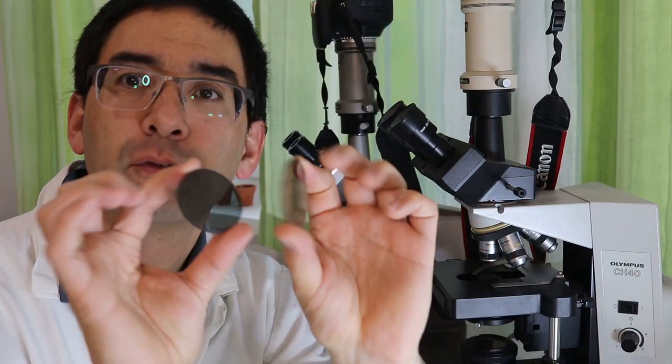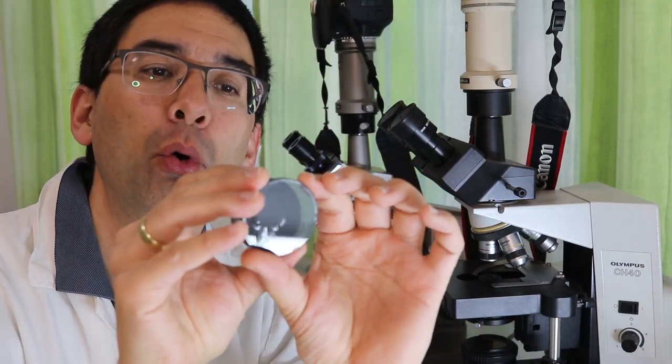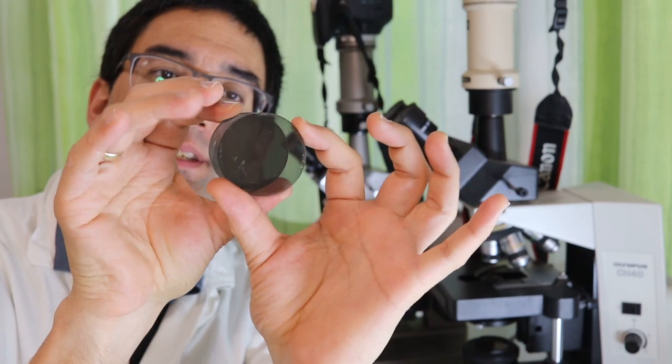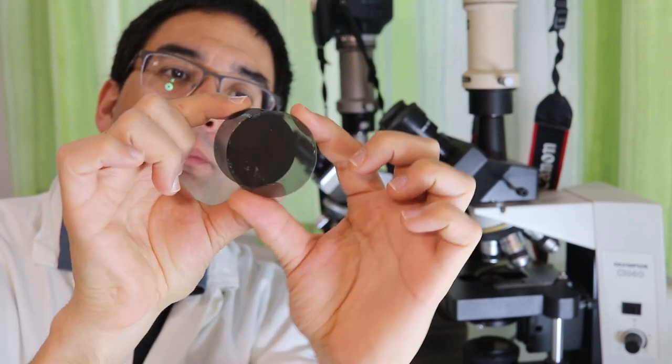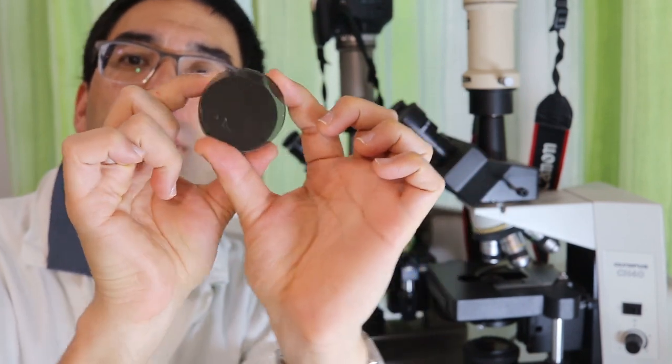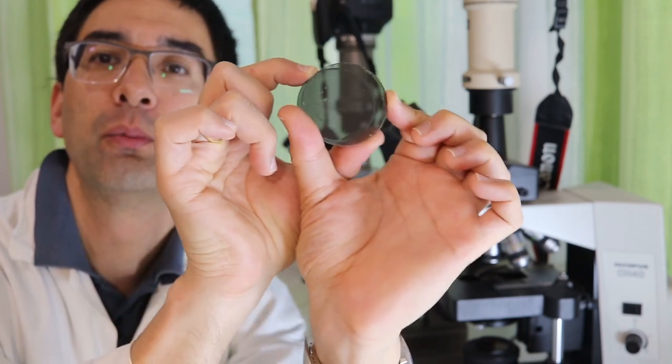What I have here is I've got two so-called linear polarizing filters and what you can see is that if you put them on top of each other and if you rotate them, then you can actually see, I hope you can see this,